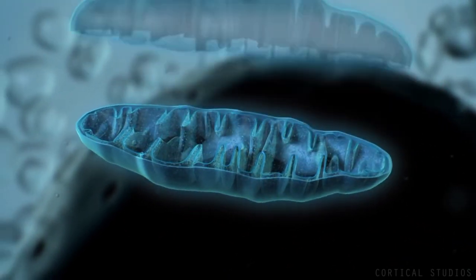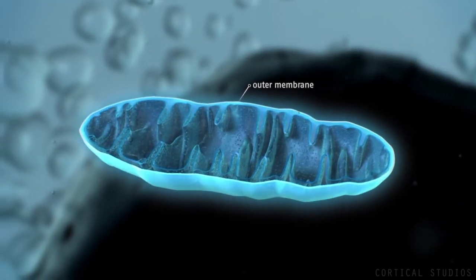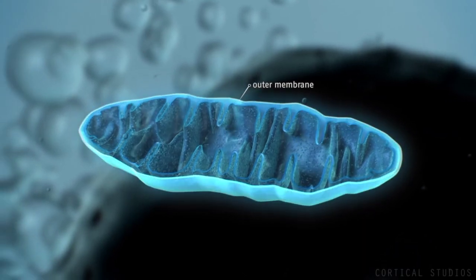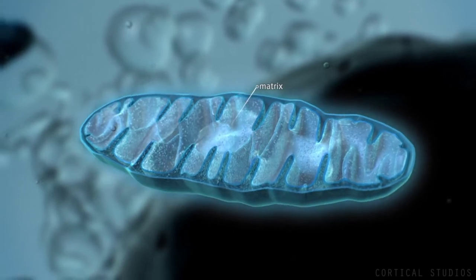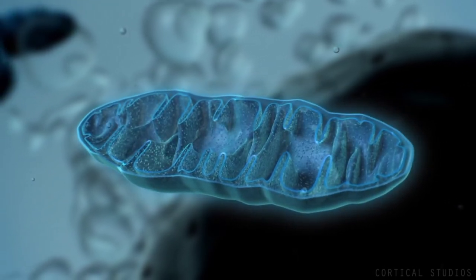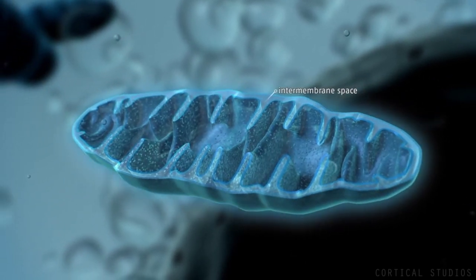Mitochondria consist of two membranes, an outer membrane separating it from the cytosol, and an inner membrane surrounding the so-called matrix. The area between these membranes is called the intermembrane space.